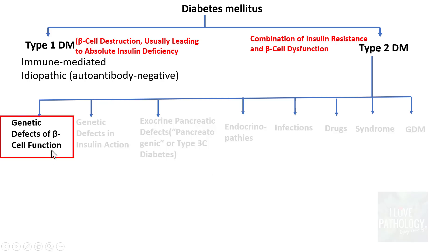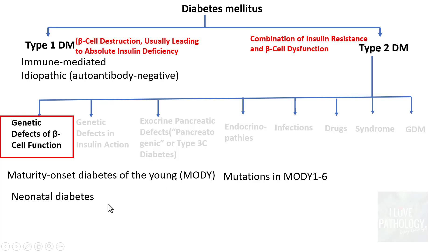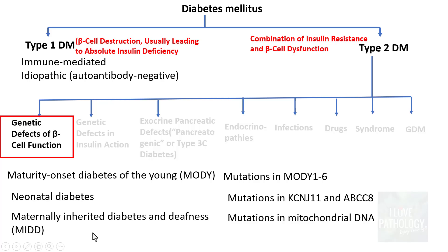Regarding genetic defects in beta cell function, the most common example is Maturity Onset Diabetes of the Young (MODY), involving mutations in genes encoding various enzymes, classified as MODY1 through MODY6. Other examples include neonatal diabetes (mutations in KCNJ11 and ABCC8 genes), maternally inherited diabetes and deafness (MIDD) caused by mitochondrial DNA mutations, and mutations in the insulin gene itself.